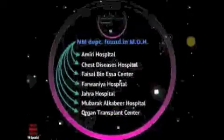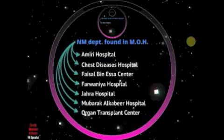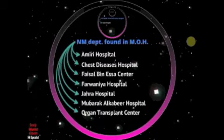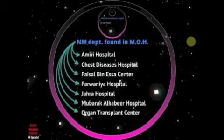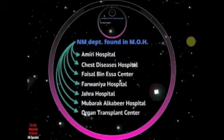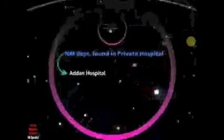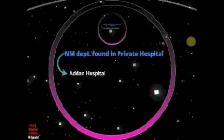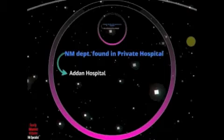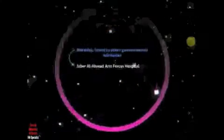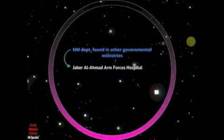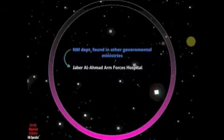Now, where can we find Nuclear Medicine departments in the Ministry of Health? You can find them in Amiri Hospital, Chest Diseases Hospital, Faisal Bin Isa Center, Farwaniya Hospital, Jahra Hospital, Mubarak Al-Kabir Hospital, and Organ Transplants Center. In the private sector there is also a department in Adan Hospital, and in the military hospital known as Jabal Ahmed Armed Forces Hospital.